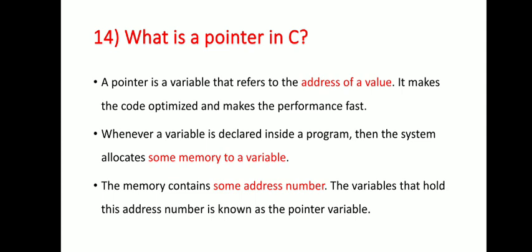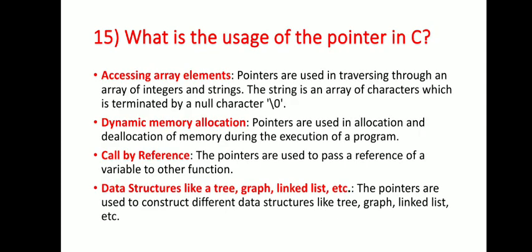Next question: what is a pointer in C? A pointer is a variable that refers to the address of a value. It makes the code optimized and makes performance fast. Whenever a variable is declared inside a program, the system allocates some memory to the variable. The memory contains some address number. The variable that holds this address number is known as a pointer variable.